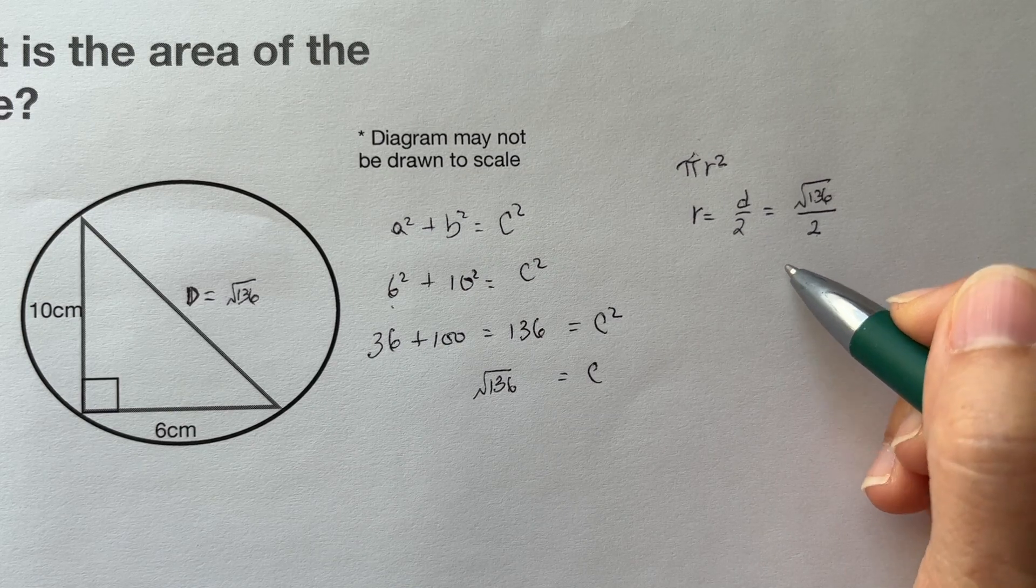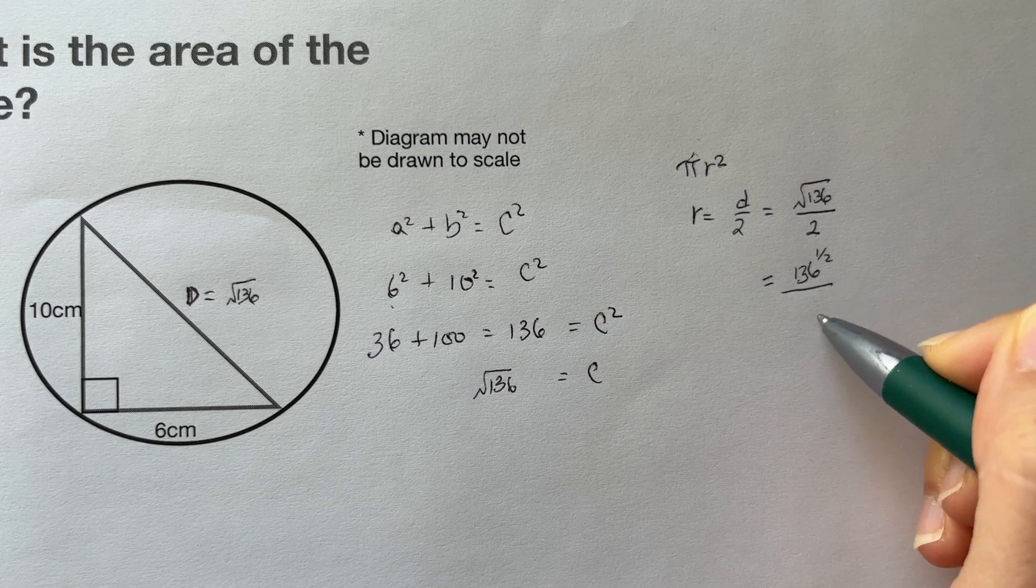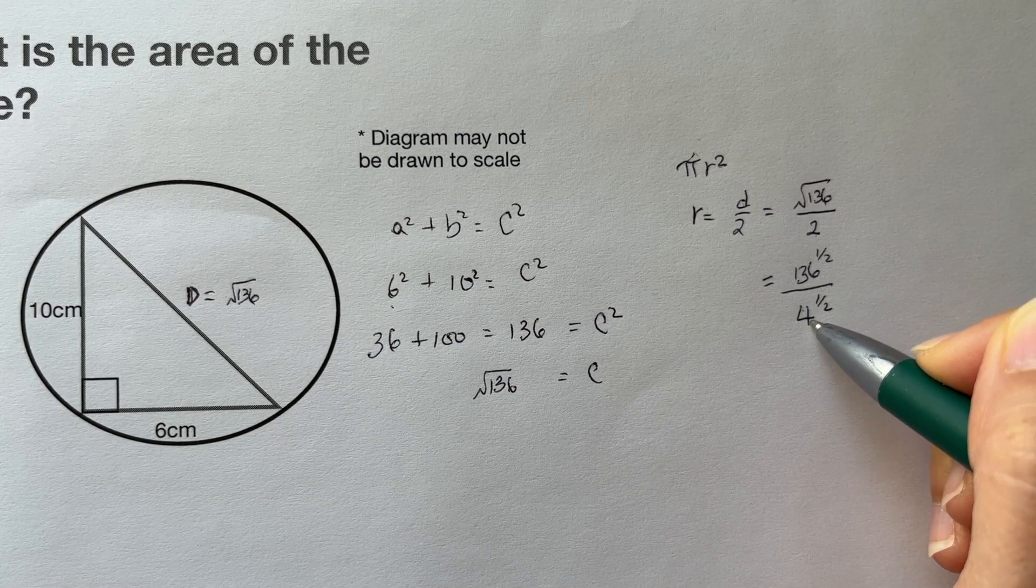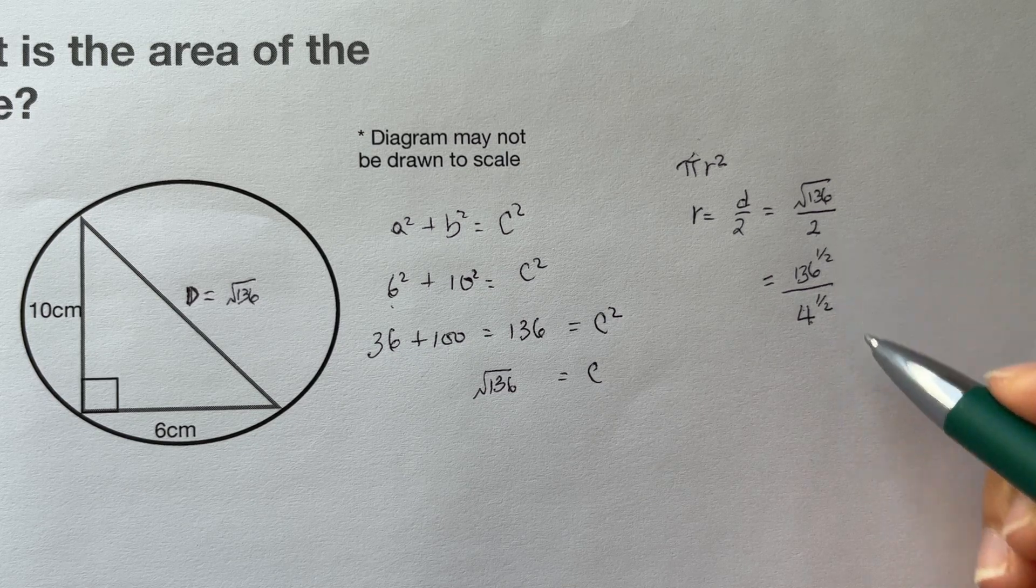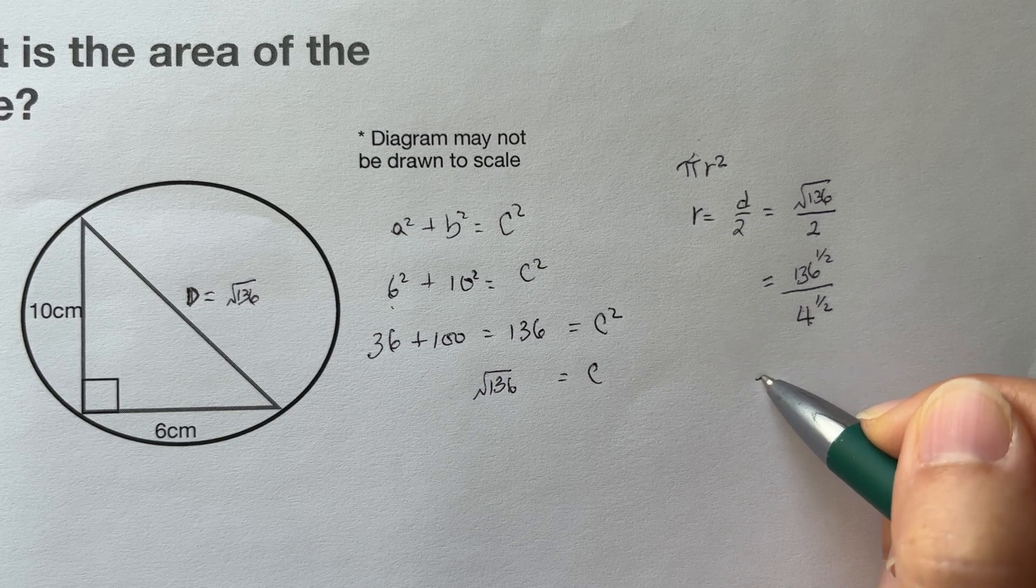The square root of 136 is 136 raised to the 1/2. And let's also rewrite 2 as 4 raised to the 1/2, since the square root of 4 equals 2.